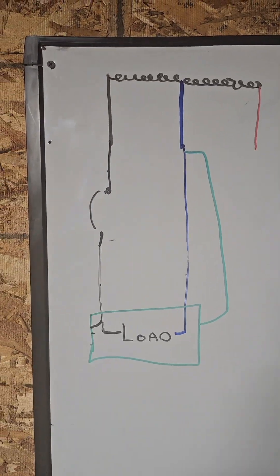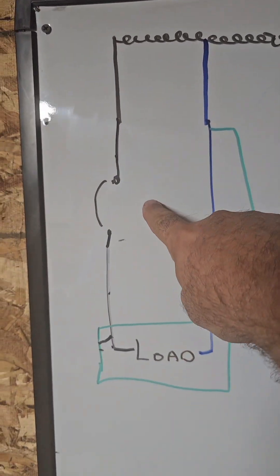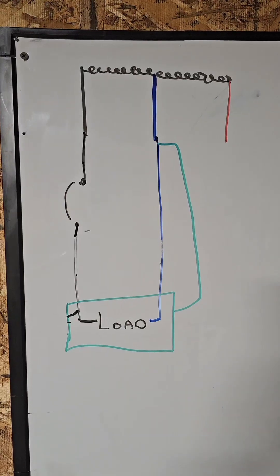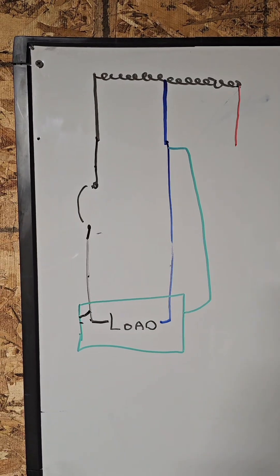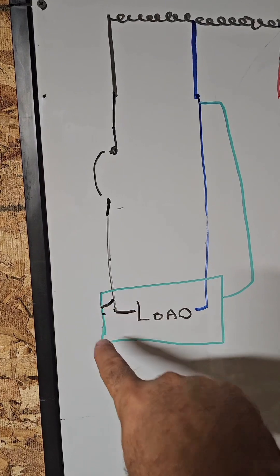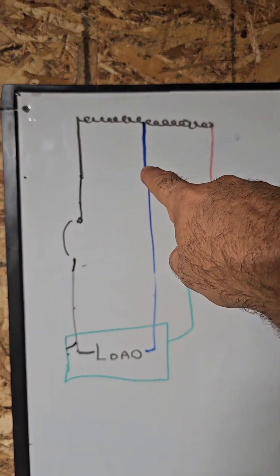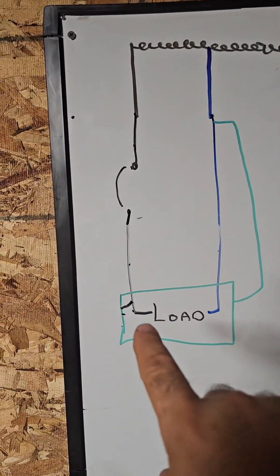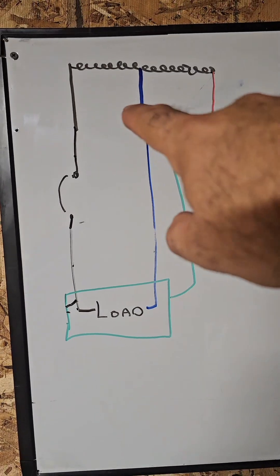So now, because this can be a fuse or a circuit breaker, the code refers to it as an overcurrent device. Now, is it clear that the fault path is from the fault point on the circuit back to the electrical source? Not back to the earth, not back to the dirt. It's from the fault back to the source. So the term the code would use is to clear a fault is to facilitate the opening of an overcurrent protection device.